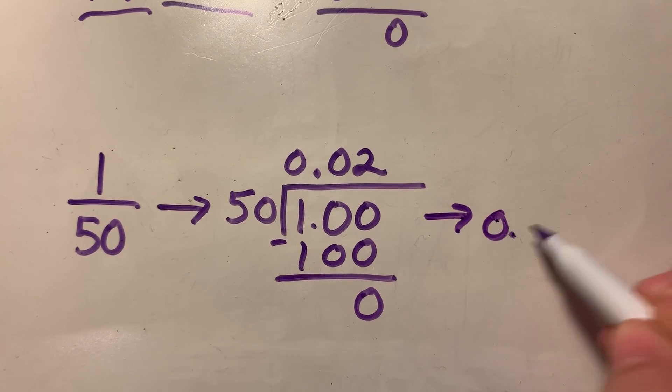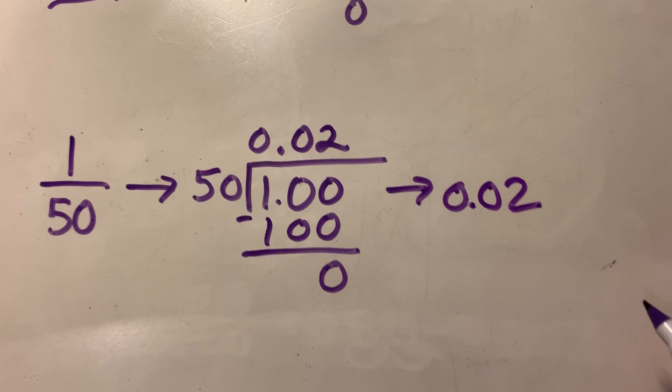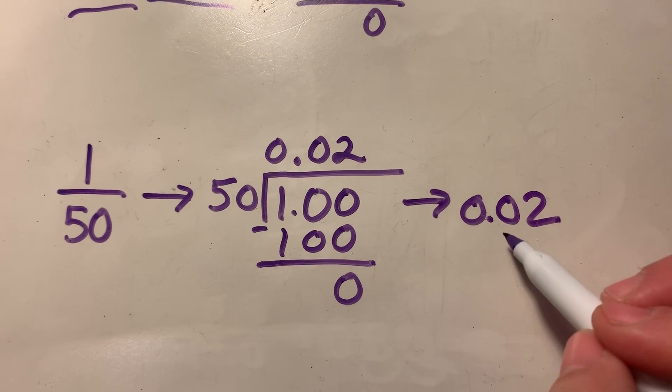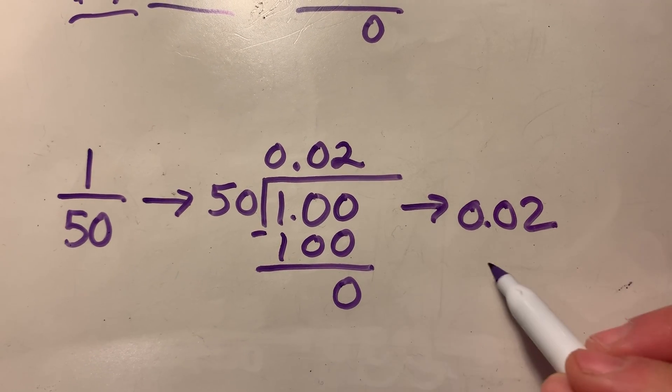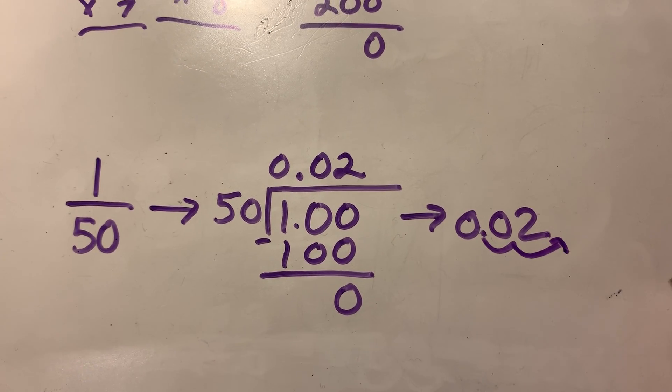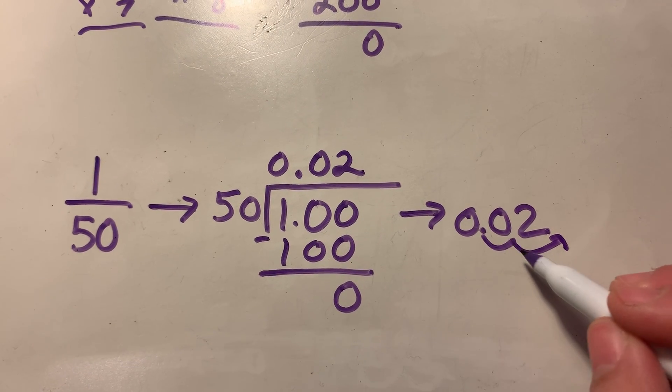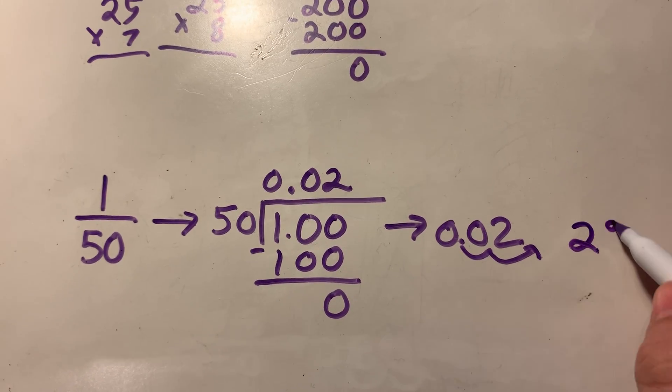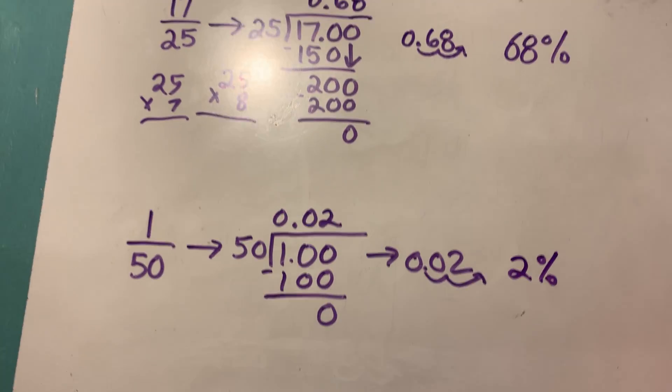So one 50th as a decimal is two hundredths to turn this decimal into a percent. We're going to move the decimal place once, twice. Over to the right. Cause we're multiplying by a hundred. And that means that one 50th is 2%.